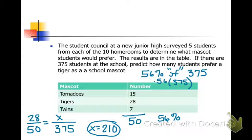You can try it both ways to make sure that you understand. The 28 out of 50 represents 56% of the student body. If 56% of the student body prefer the tiger, then 56% of the 375 students can be predicted to prefer the tiger. And that's how we would use our survey results to make predictions.